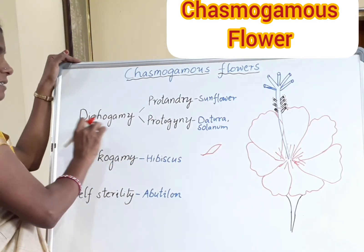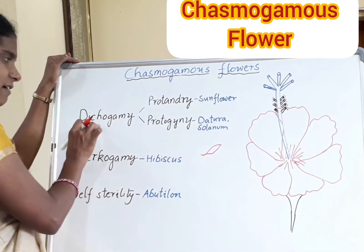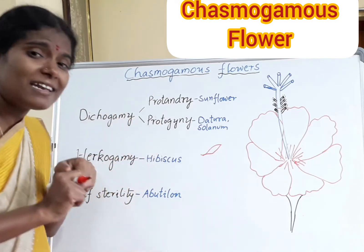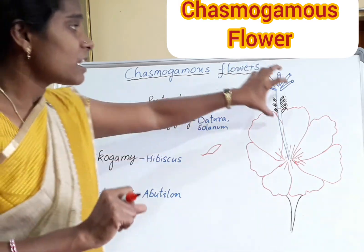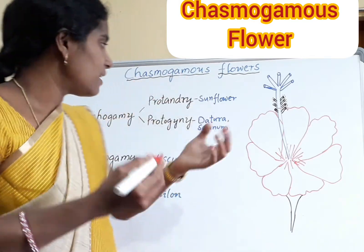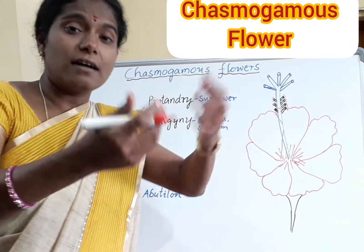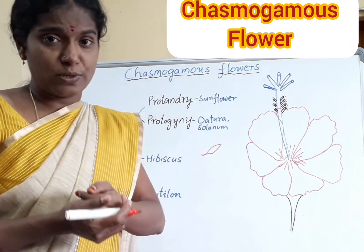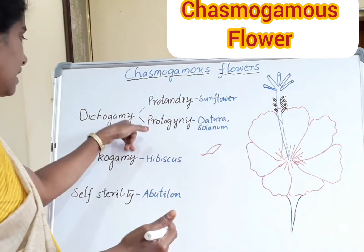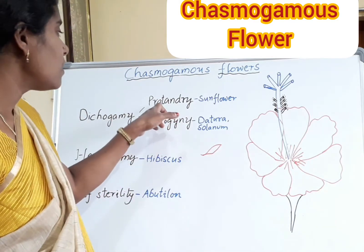Coming to Dichogamy — listen carefully, students. Dichogamy means the reproductive organs attain different maturity times. The stigma and pollen grains mature at different times. This is the first strategy. Dichogamy is divided into two types: Protandry and Protogyny.